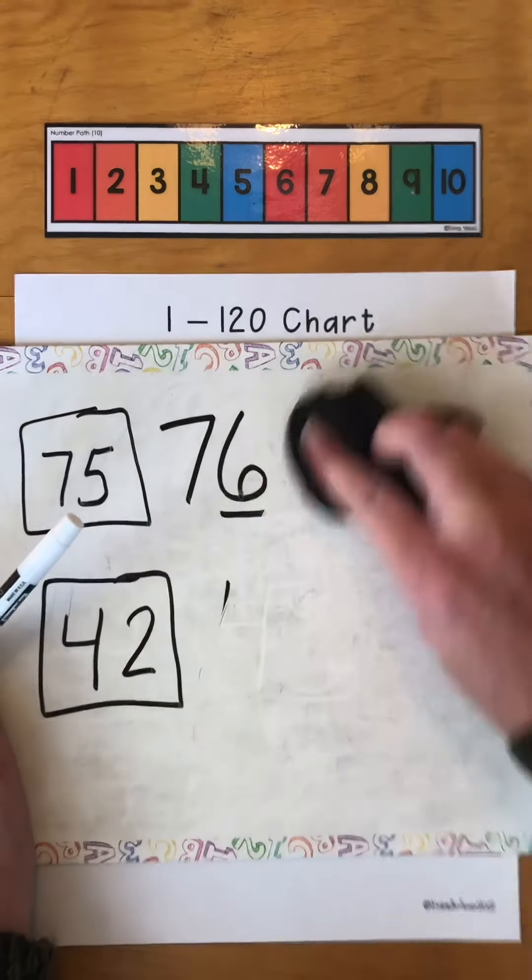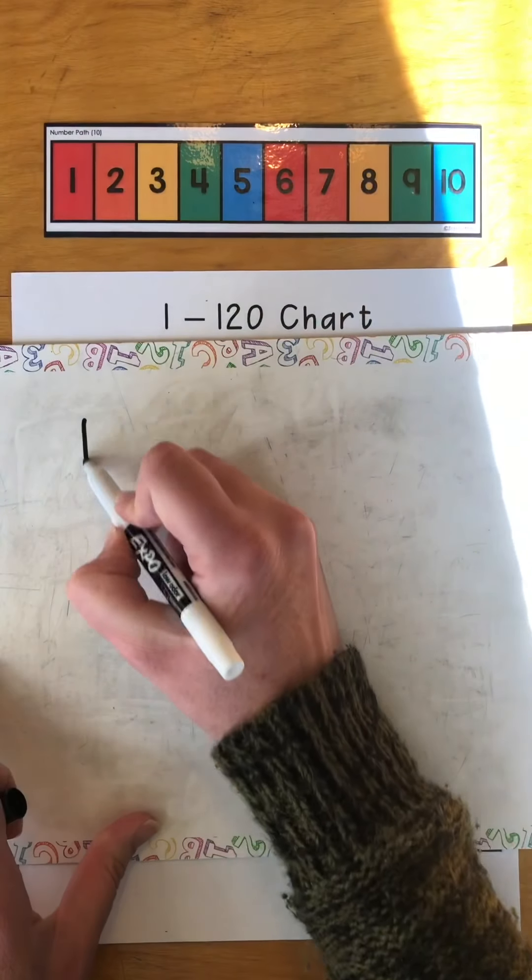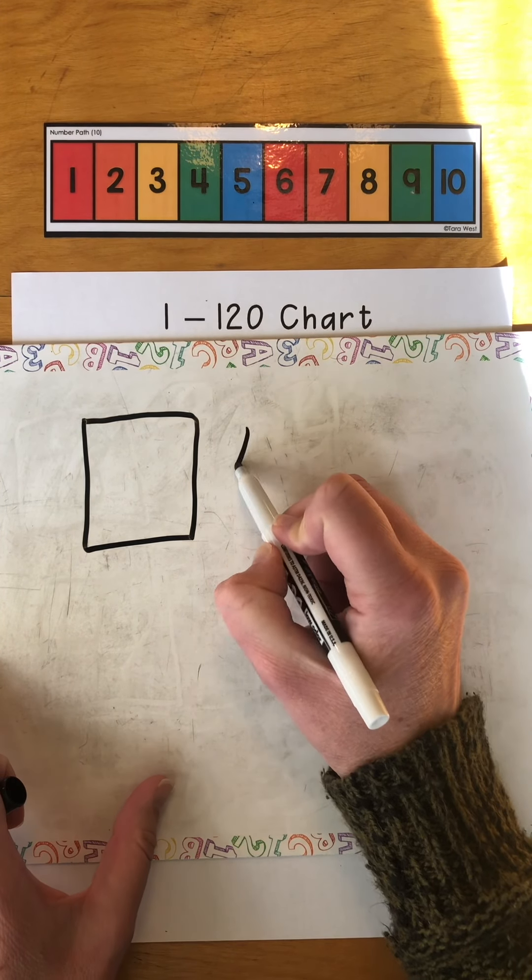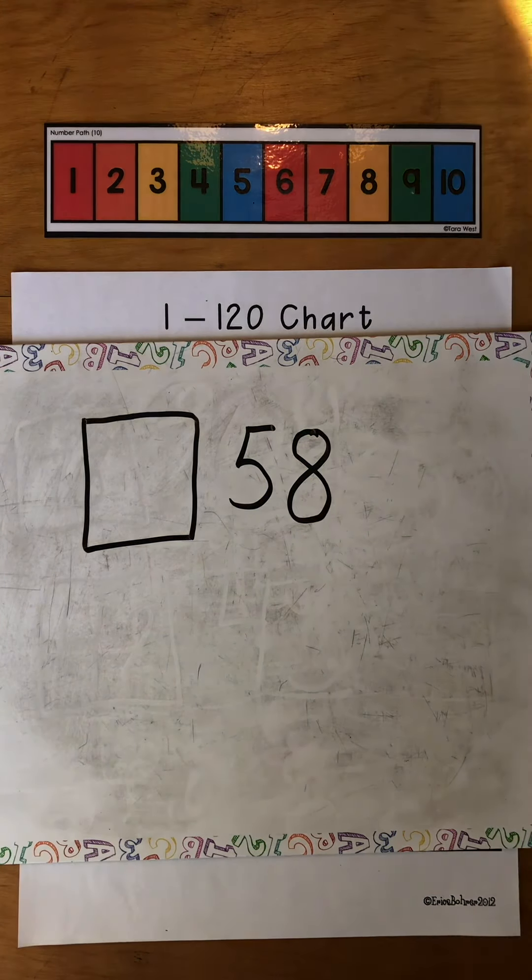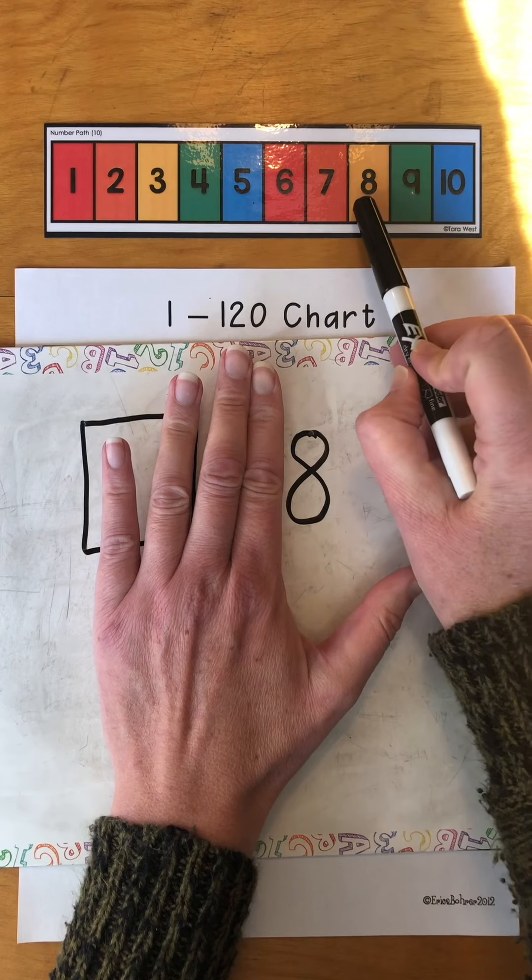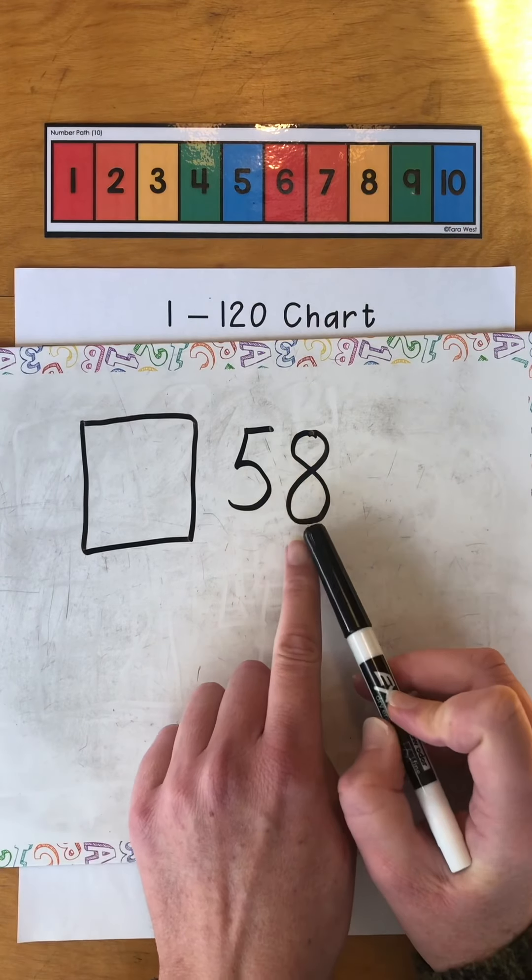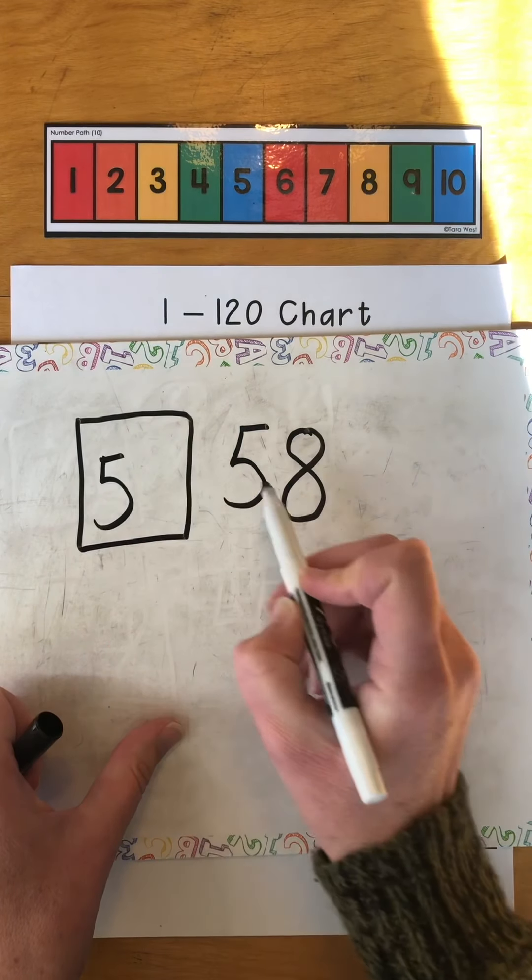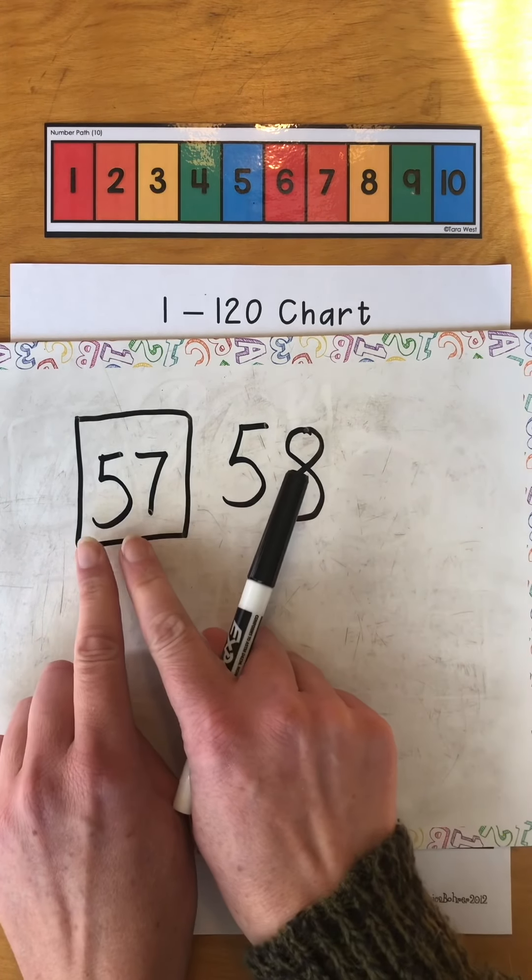Let's erase this and do a couple more, and then we'll just look at our 120 chart and do some quickly. We're going to find out the number that's one less than, let's do 58. So if we're thinking about it, 58, I'm just going to think about that eight for a minute. What's one less than eight? Seven. But it wasn't just eight, it was 58. So I have to remember I'm going to keep that 50 and go one less than the eight, which is seven. So one less than 58 is 57.